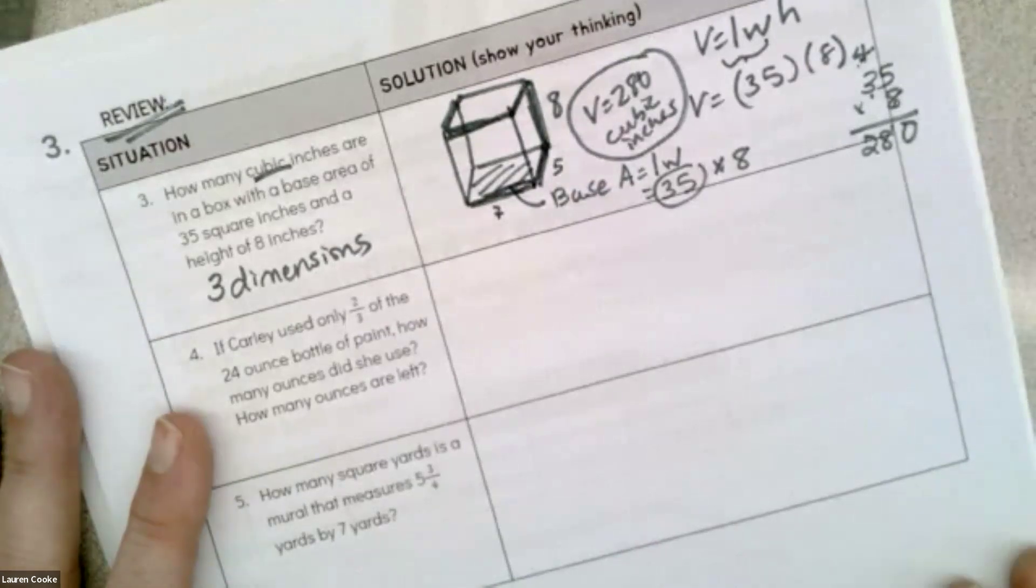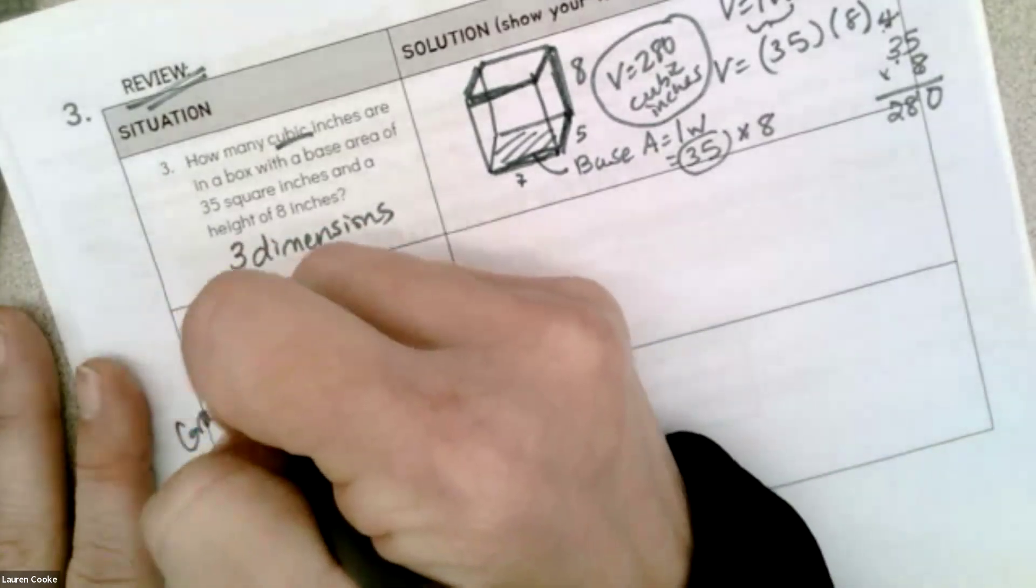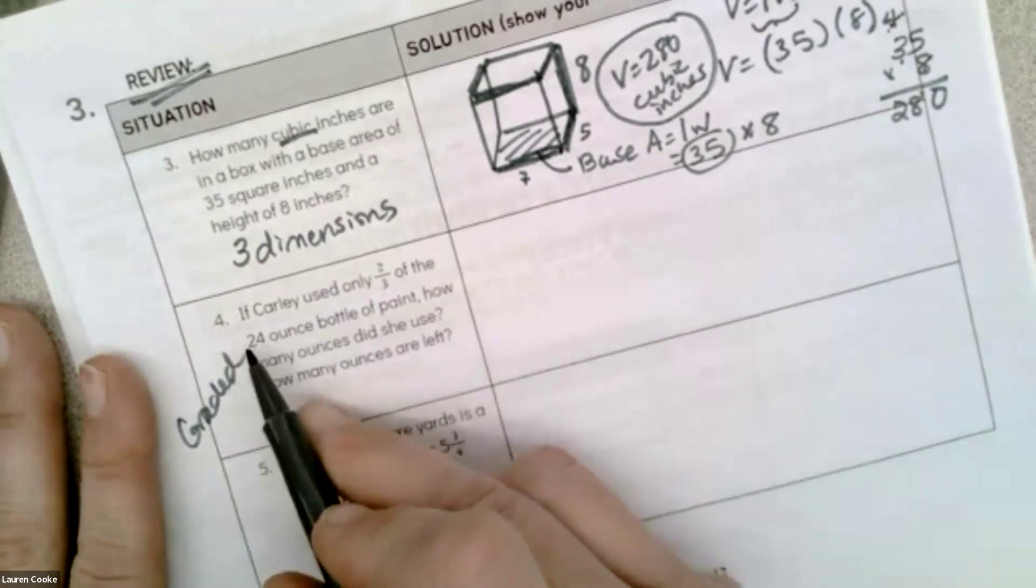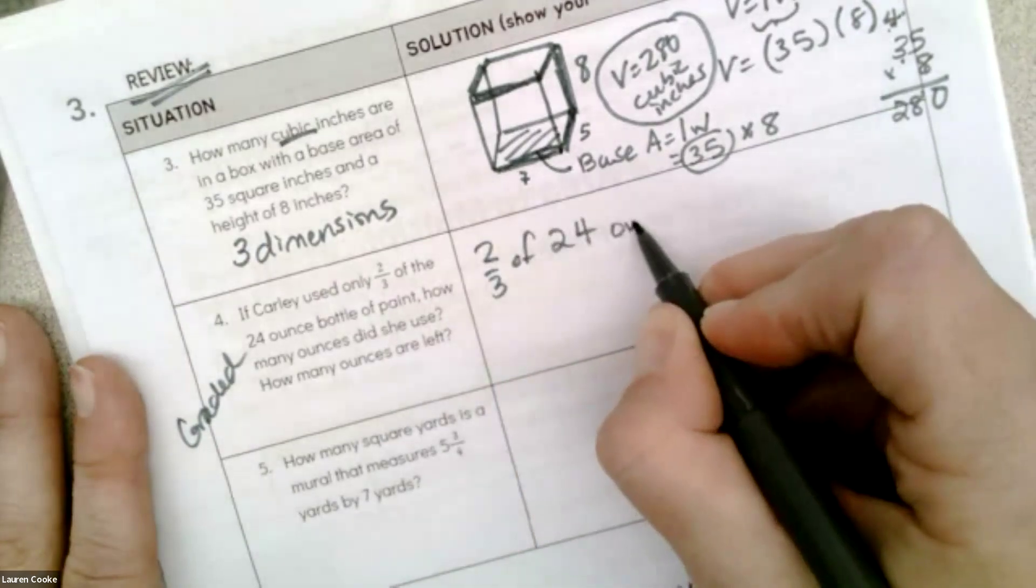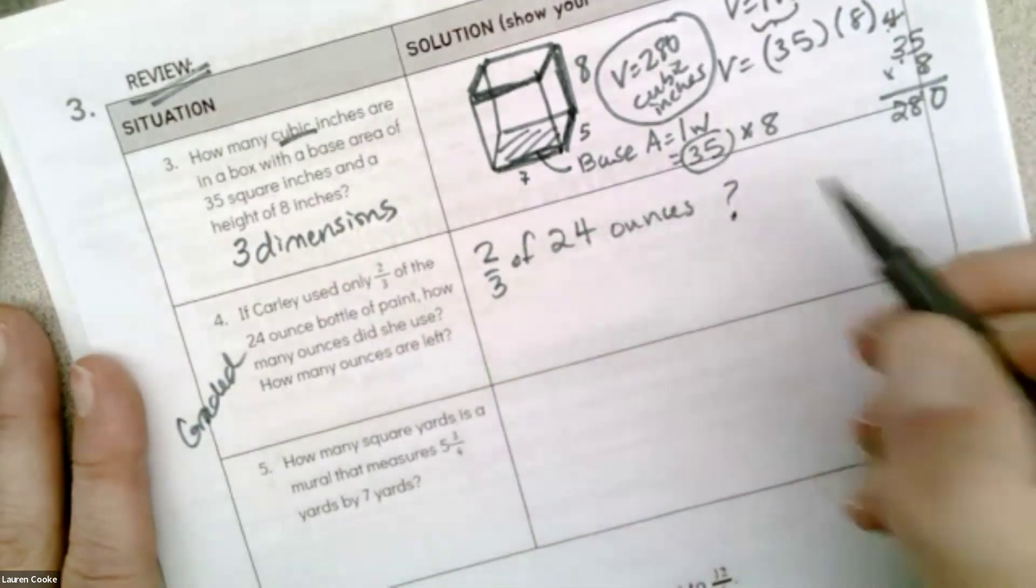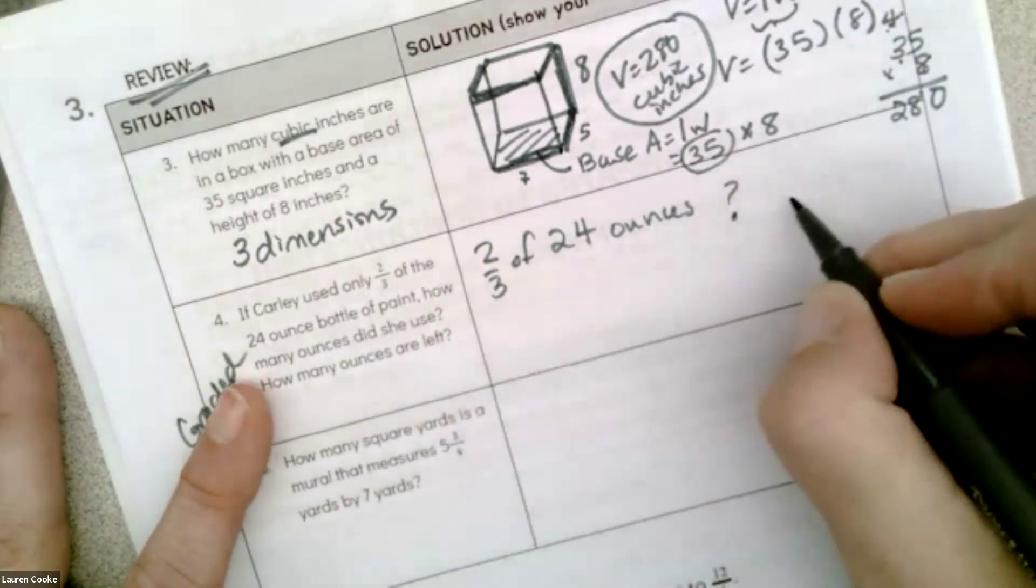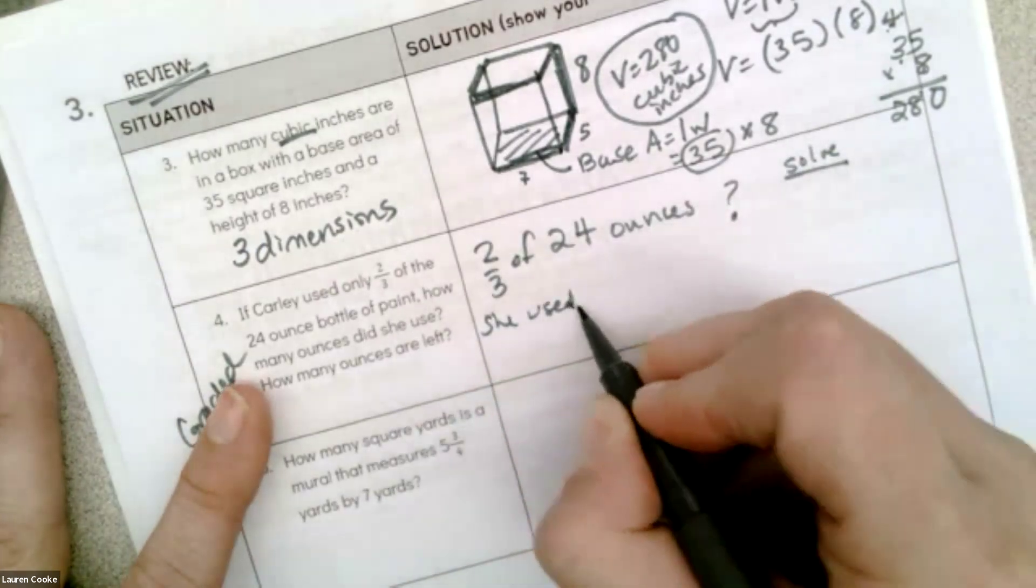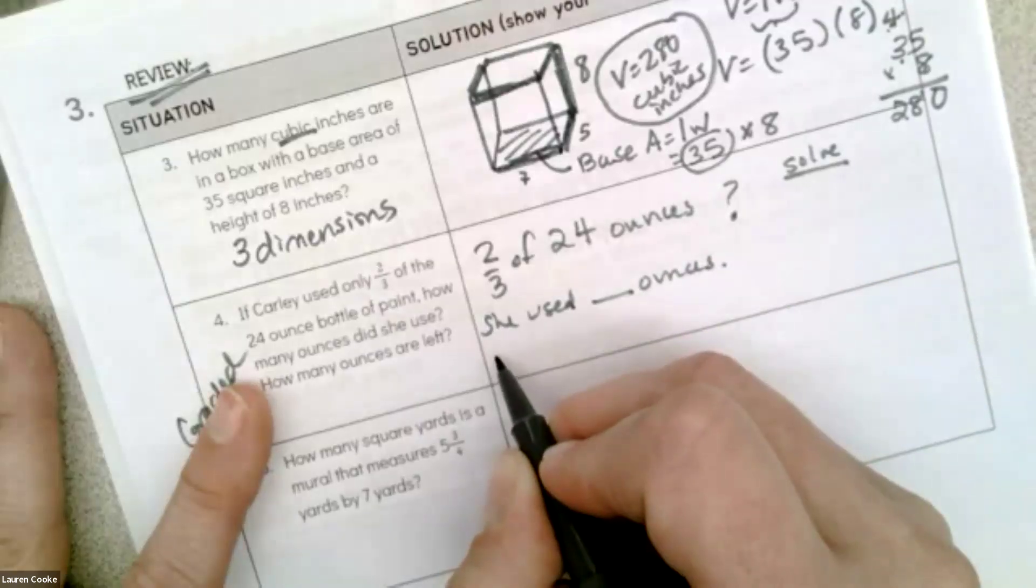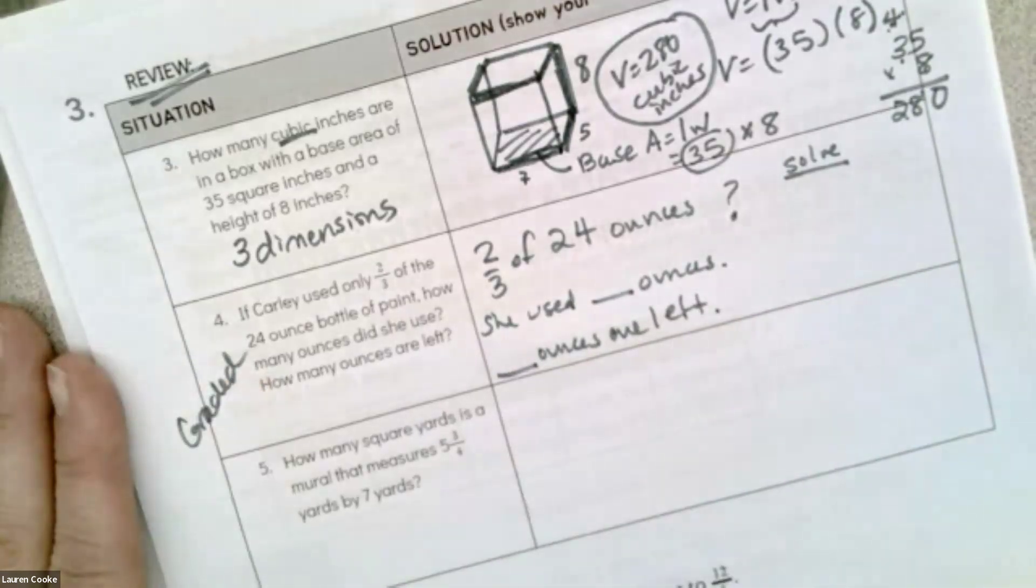On the next one, I'm going to leave that one for you, and this is going to be the graded one. Carly used only 2/3 of 24 ounces. How many did she use? So we're asked two questions: how many did she use? Answer: she used blank ounces, and blank ounces are left. You have to answer both of those questions, and we've talked about what 'of' means—multiply.